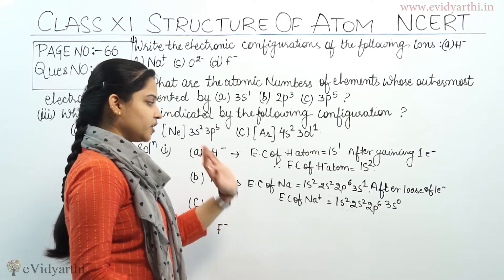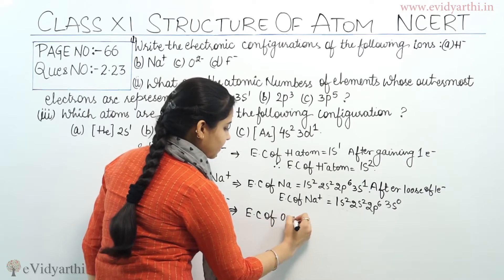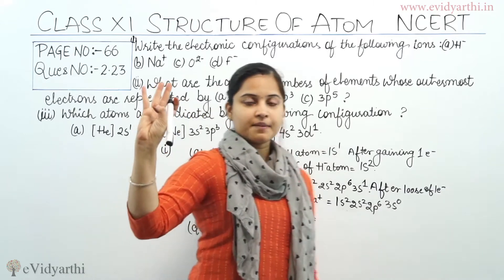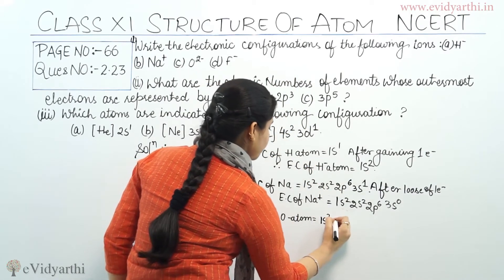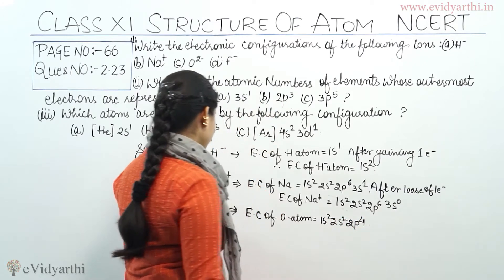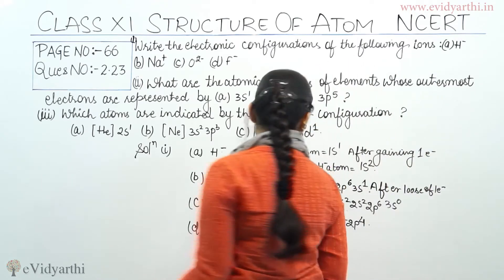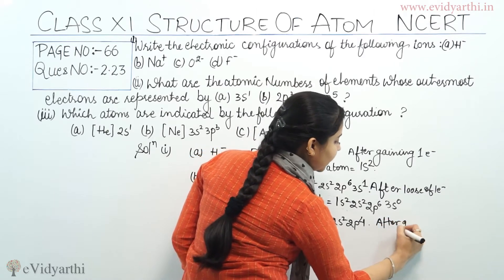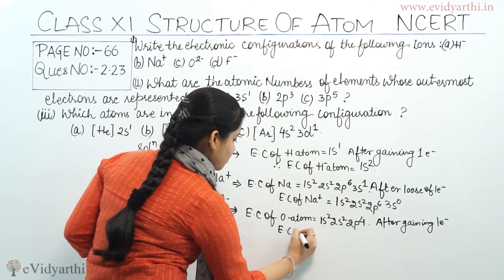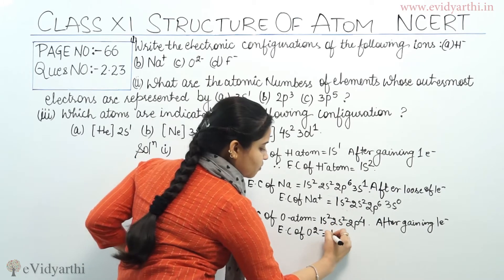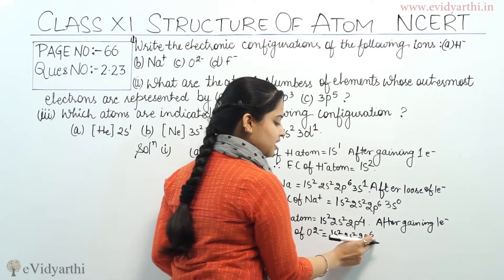So Na positive has electronic configuration 1s2, 2s2, 2p6 after loss of one electron. For O2 negative: the electronic configuration of oxygen atom — oxygen is at the 8th position, so electrons are 8. Configuration: 1s2, 2s2, 2p4. For O2 negative, there is gain of 2 electrons. So 2p4 becomes 2p6. Electronic configuration of O²⁻ is 1s2, 2s2, 2p6.